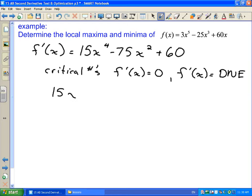So we set this thing equal to zero, and we start to solve. We can divide through by the 15 to get x to the power of 4 minus 5x squared plus 4 equals zero. And then we can factor this.